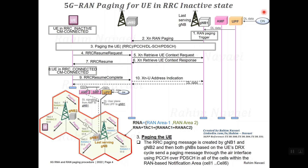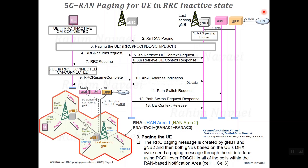In this step, gNB2 as the new serving gNB sends a request to the AMF to change the path in the downlink direction. A Path Switch Request is sent, and the AMF sends back the response to gNB2. gNB2 then sends a request to delete the UE context in gNB1. At this point, downlink data is sent directly from the UPF to gNB2, and from there to the UE.